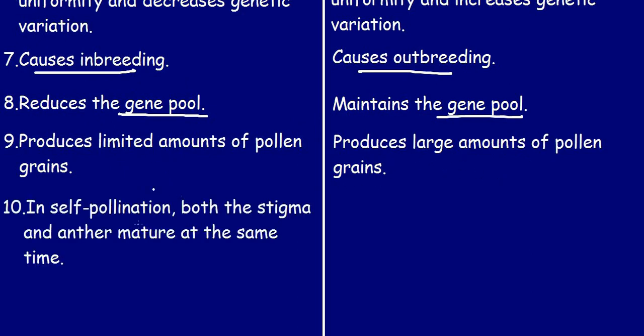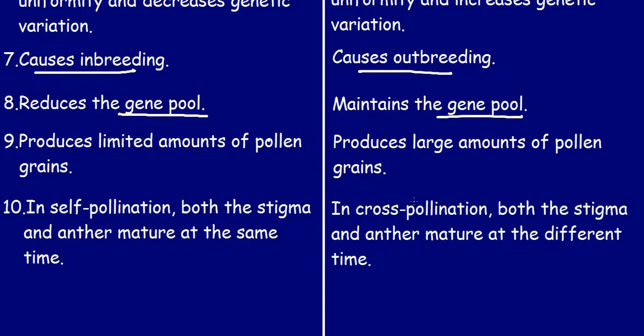The tenth point: in self-pollination, both the stigma and the anther mature at the same time. For cross-pollination, the stigma and the anther mature at different times.